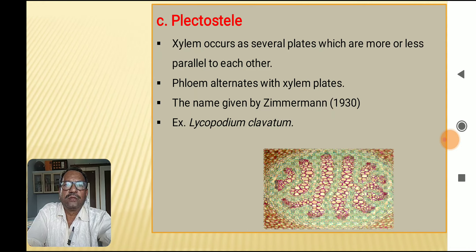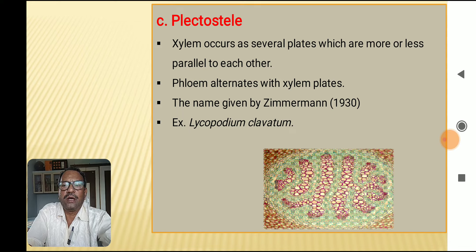The third type is plectostele. The xylem occurs as several plates which are more or less parallel to each other, and phloem alternates with the xylem plates. The name was given by Zimmermann in 1930. It is present in Lycopodium clavatum. The diagram shows the plectostele.